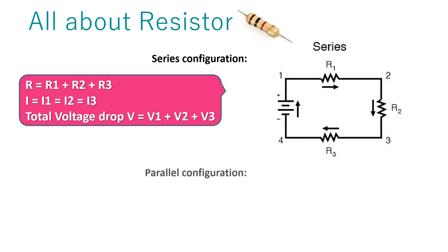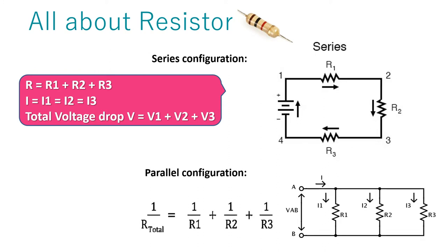If we connect them in parallel, then the final value of resistor can be derived from this formula. In parallel connection, voltage drop across each resistor will be same but the current passing from each resistor will be different.